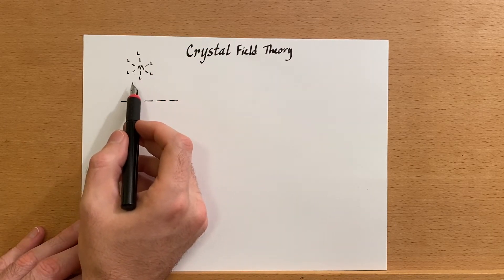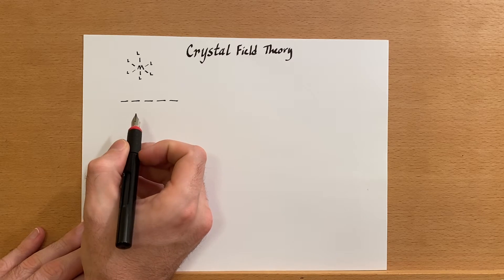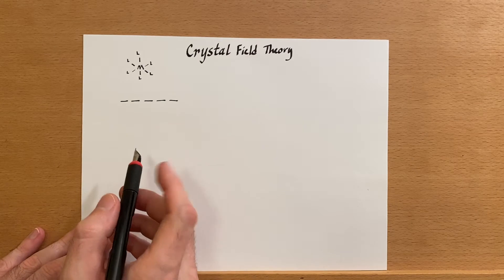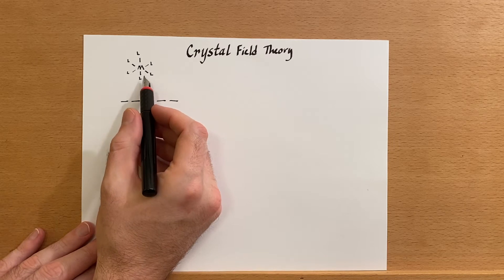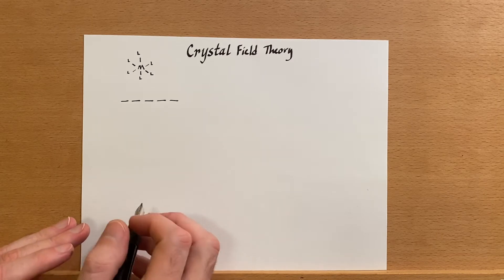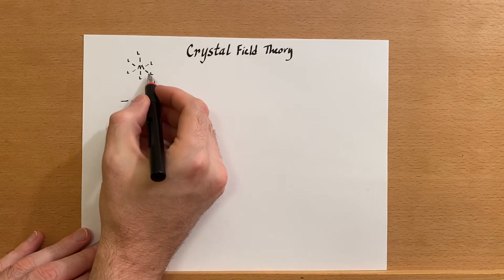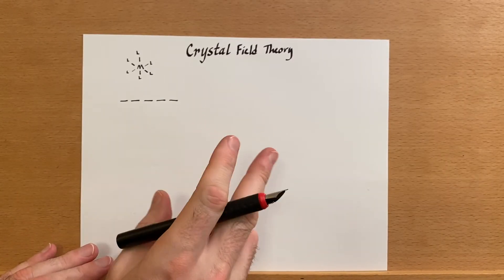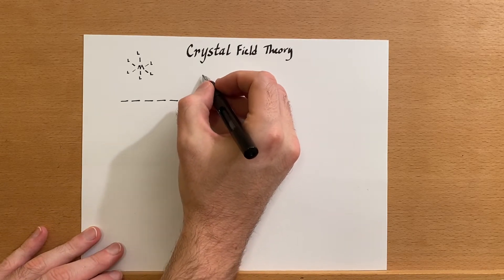These ligands are going to interact with the dz² orbital and the dx²-y² orbital a lot more strongly than they will the orbitals that are in between the ligands. Those two orbitals get pushed up higher because there's sigma donation or direct overlap between the ligand and the metal. That's going to push up two of those orbitals, the dz² and the dx²-y².